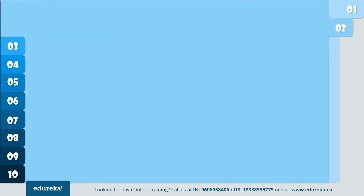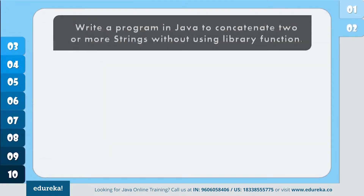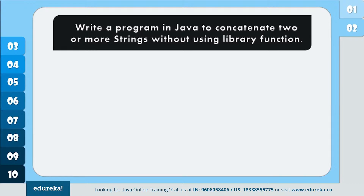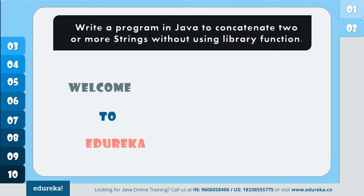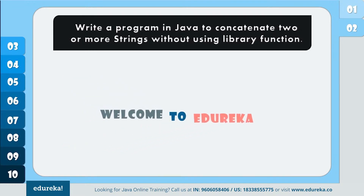Now let's see the next program. The problem statement is: write a program in Java to concatenate two or more strings without using a library function — that is, you have to concatenate or join two strings without the use of the library function concat.